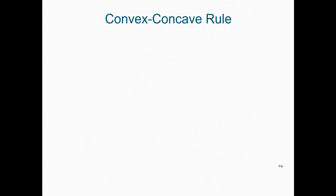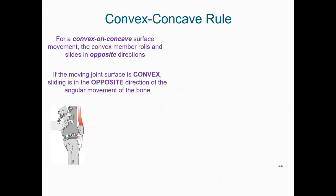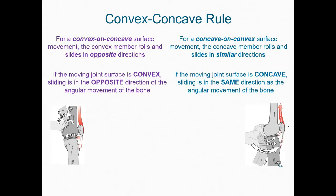Let's run through the convex-concave rule. For a convex on concave surface movement, the convex member rolls and slides in opposite directions. In other words, if the moving joint surface is convex, sliding is in the opposite direction of the angular movement of the bone. For a concave on convex surface movement, the concave member rolls and slides in similar directions — if the moving joint surface is concave, sliding is in the same direction as the angular movement of the bone.